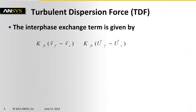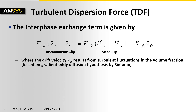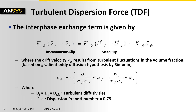Let us briefly go through the theoretical aspect of the turbulent dispersion force, which is one of the focus parameters for this study. The drag on a particle is modeled using the interface exchange term. In a turbulent fluid, this term should be based on the instantaneous slip velocity and not on the mean slip velocity as is traditionally done. Simonin has proposed a model based on the gradient eddy diffusion hypothesis that adds a correction term to the mean slip velocity. This correction term requires a drift velocity, which is a function of local volume fraction and its gradient for both primary and secondary phases.